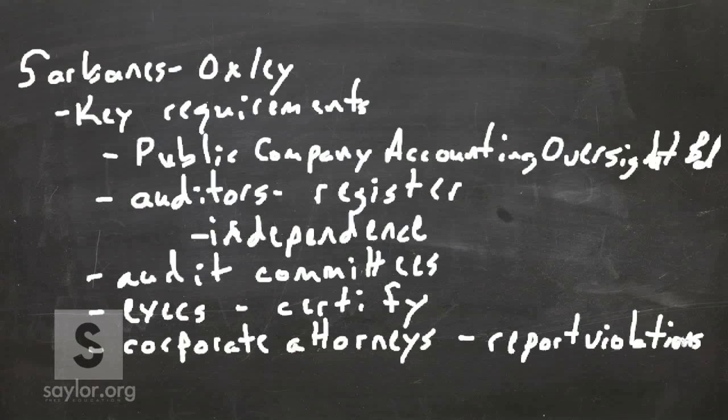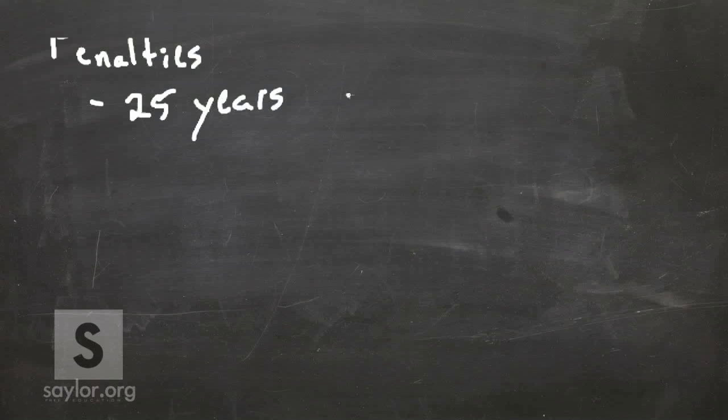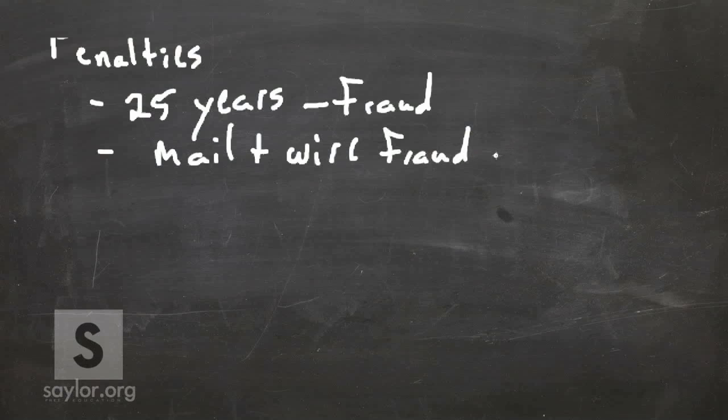Let's take a look at some of the penalties that we've seen instituted by Sarbanes-Oxley. There were several penalties that were instituted, including fines and imprisonment up to 25 years in prison for defrauding investors. There were increased prison sentences for mail and wire fraud using the mails or using electronic means to commit fraud. These were raised from 5 to 20 years.